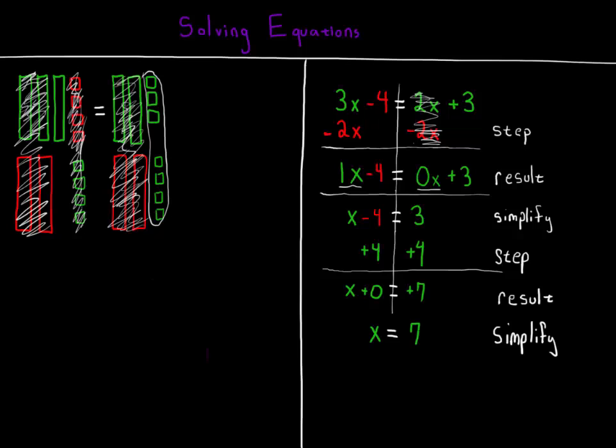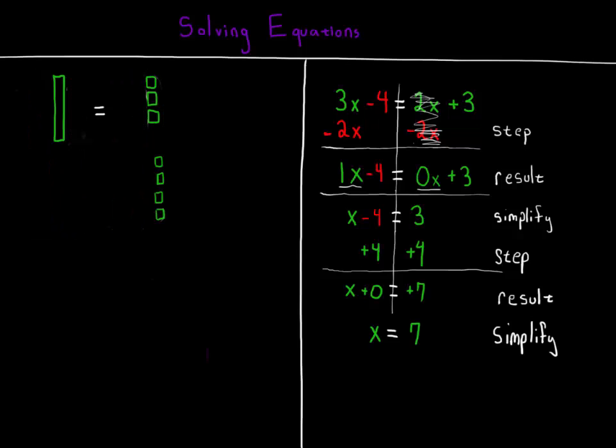Let's have a look at the model by erasing everything we scribbled out with our zero pairs. Now you can see for sure that our model reflects what we did with our equation. A single x is on the left and 7 units are on the right. So the answer is x equals 7.